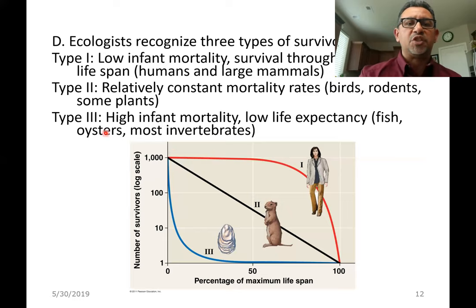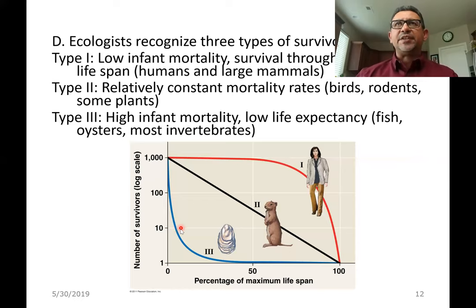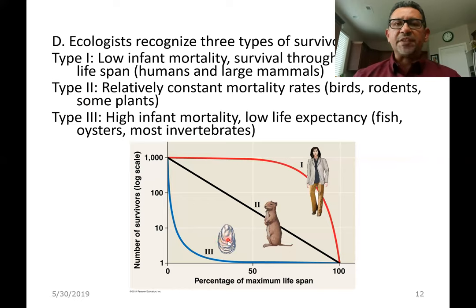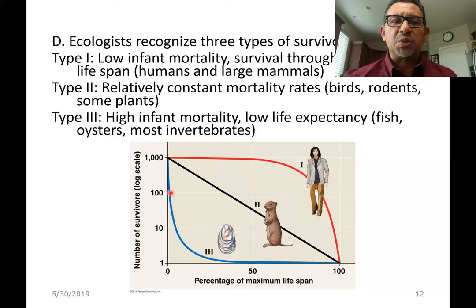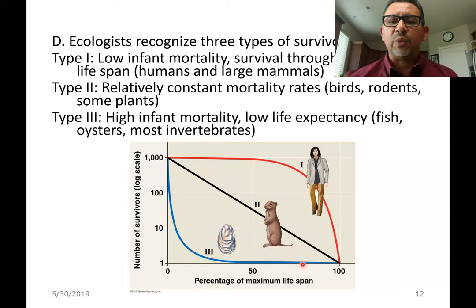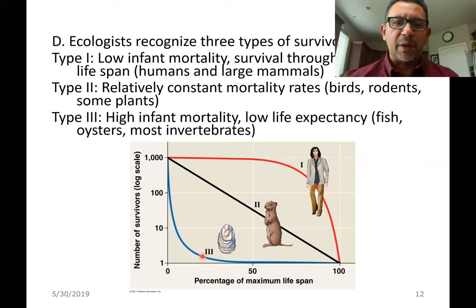In contrast, the type 3 survivorship curve shows that most members of some populations die very early on. This happens with many species that reproduce in large numbers and have a short life expectancy — think populations of mosquitoes, or the organism shown in this picture which is a mussel. The same can be said about jellyfish, mollusks, and arthropods like shrimp. There is no parental care for these individuals. It is a numbers game: the greater the birth rate, the greater the chance that at least a few individuals will survive throughout most of the lifespan. Very early on, the majority of members born in a given year for these populations are going to be dead.